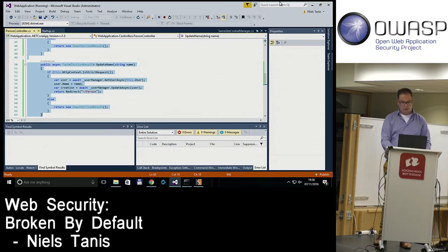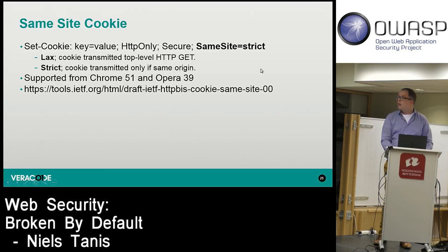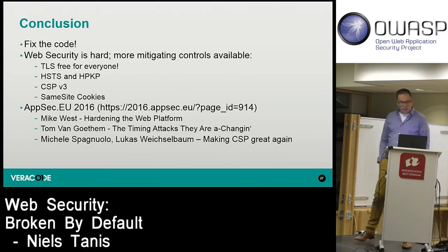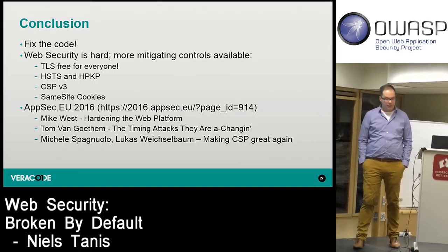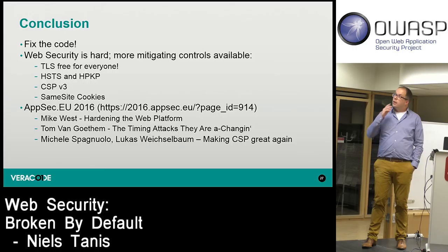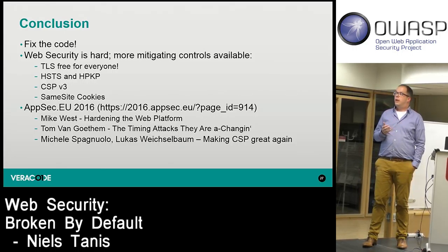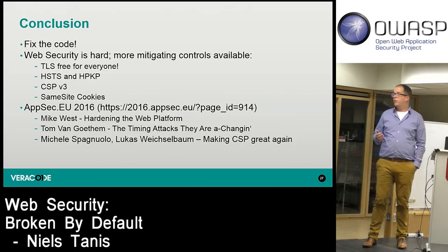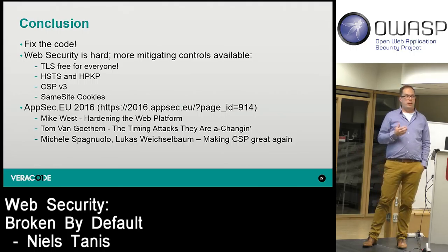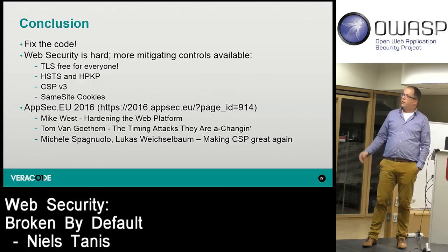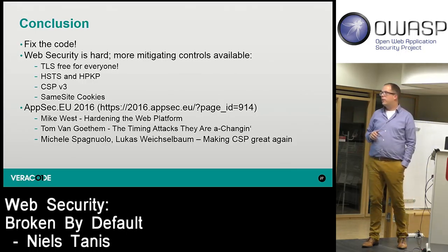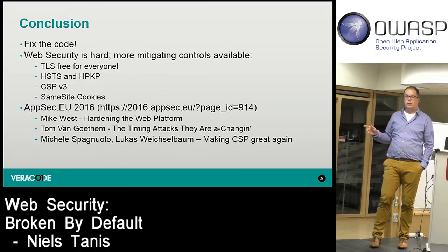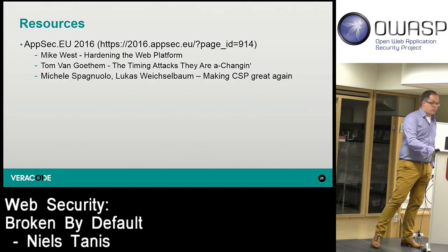To conclude: it's always important to fix code and write good software. XSS must be remediated with input validation and output encoding. The things I've shown — TLS with Strict-Transport-Security and key pinning, Content Security Policies, and same-site cookies — should all be in addition to good coding practices. Same-site cookies in particular are quite powerful and will eliminate a lot of CSRF risks. I encourage you to look at the presentations by Tom van Goethem on timing attacks, Mike West from Google, and the Google team talking about making CSP great again.